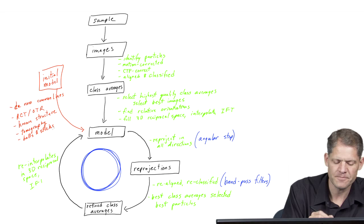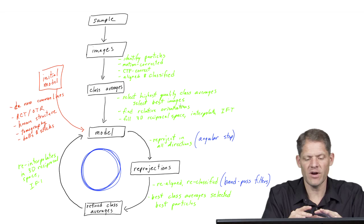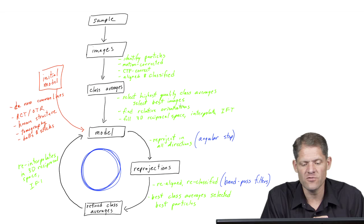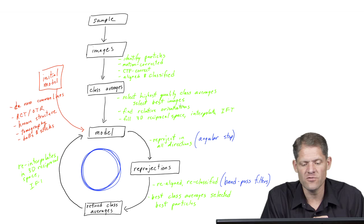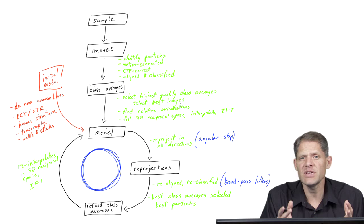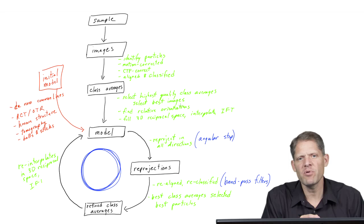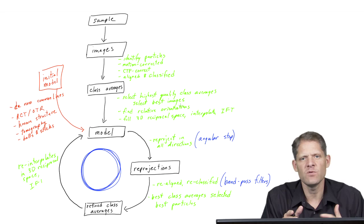Obviously there are lots and lots of variations on this very generic flow chart of the steps involved in 3D reconstruction. There are lots of different kinds of samples with all of their own particular caveats. So this is just meant to illustrate the kinds of operations that happen, and as you read different papers and start doing this yourself, feel free to rearrange things in whatever order seems to make sense for that situation.